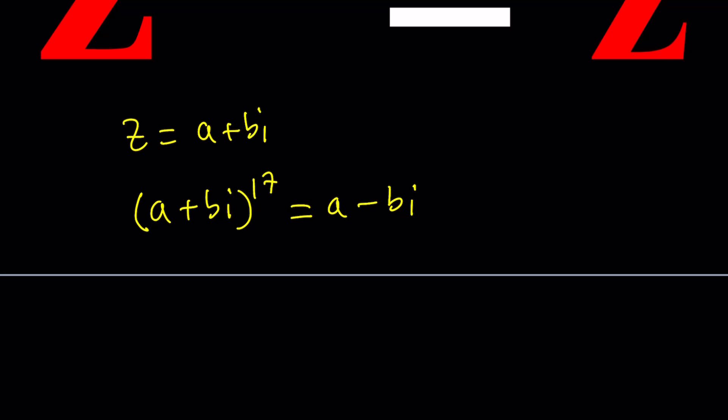We could try the following. This is kind of like a general strategy. Whenever you see a complex number multiplied by the conjugate, it makes more sense if you multiply by A plus B I because we have its conjugate on the right-hand side. So if you multiply both sides by A plus B I, then this is just going to turn into 18th power. And the right-hand side is going to become A squared plus B squared. That's going to be a real number.